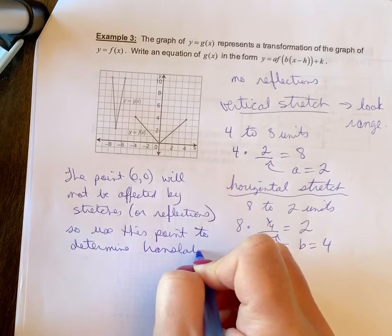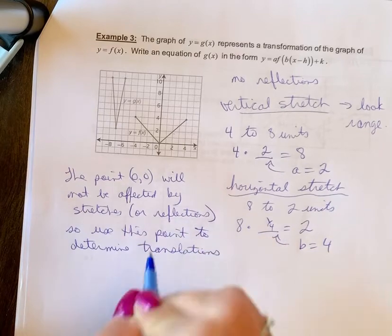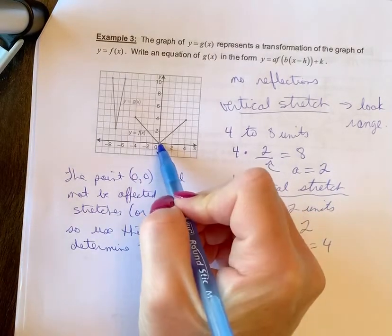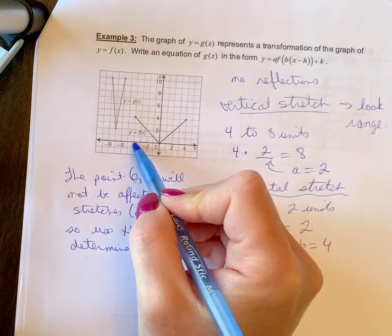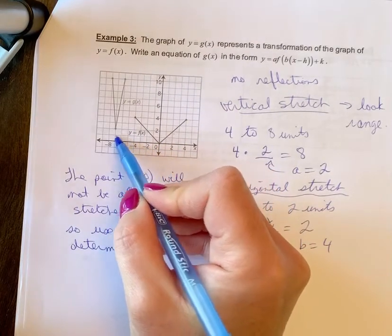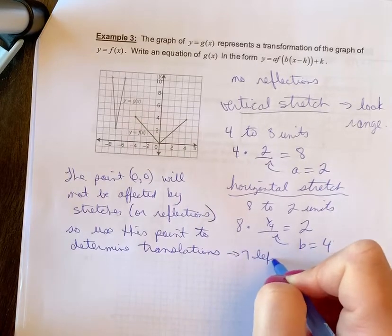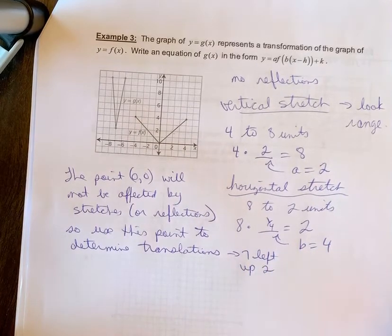Translations are the movement up, down, right, left. So what I'm going to do is I can just count this from here and I'm going to go 1, 2, 3, 4, 5, 6, 7 left and up 2. So this would mean I went 7 left and up 2.